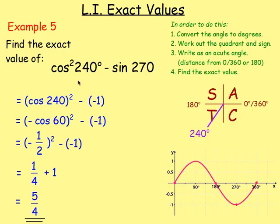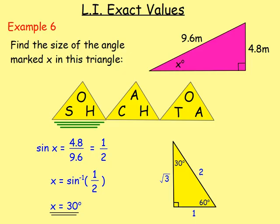For cos of 4 × 240 — first work out the exact value, then simplify. Because this is a multiple of 90, you can just use the graphs. We can also apply exact values to answer questions like finding the exact value of x in a right-angled triangle — just think back to SOH CAH TOA. That works out to be 30 degrees.